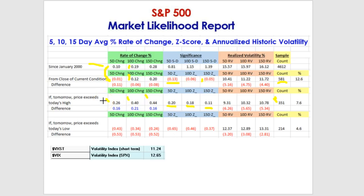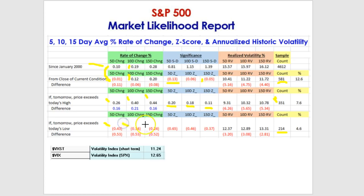And this is what can be helpful for us: 214 times the market went below Friday's previous day's low. When that happened, looking five days later, the market was down 0.43%. The 10-day was down 0.34%, and the 15-day was down 0.24%. The Z-scores show almost half a standard deviation to the downside on the five-day.